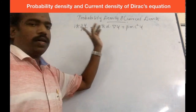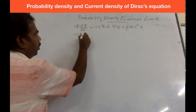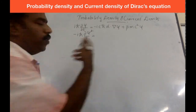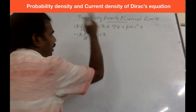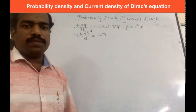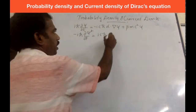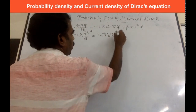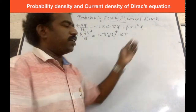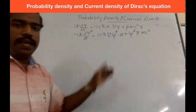We need to write first the Hermitian conjugate of this equation. This is: minus i h-bar (d psi-dagger / dt) equals i c h-bar. Now we are applying the product rule: alpha dot del psi becomes del psi-dagger dot alpha, because the matrix product is reversed under Hermitian conjugate.